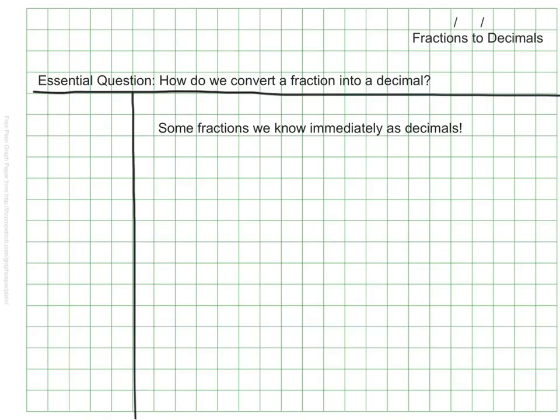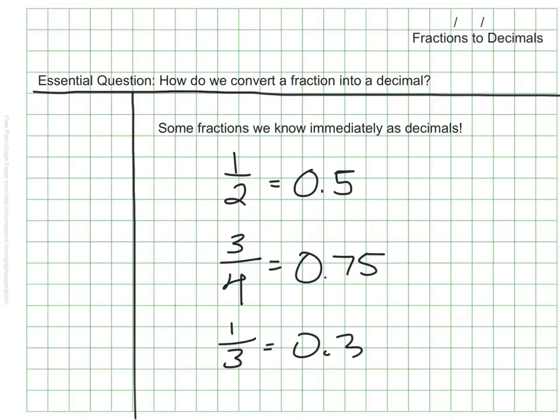There are many fractions that we all know immediately as decimals. We all know that 1/2 is written as 0.5, or 5 tenths. We also know that 3/4 is 0.75, or 75 hundredths. Most of us even know that 1/3 is 0.3 repeating. Some of us know that as well.